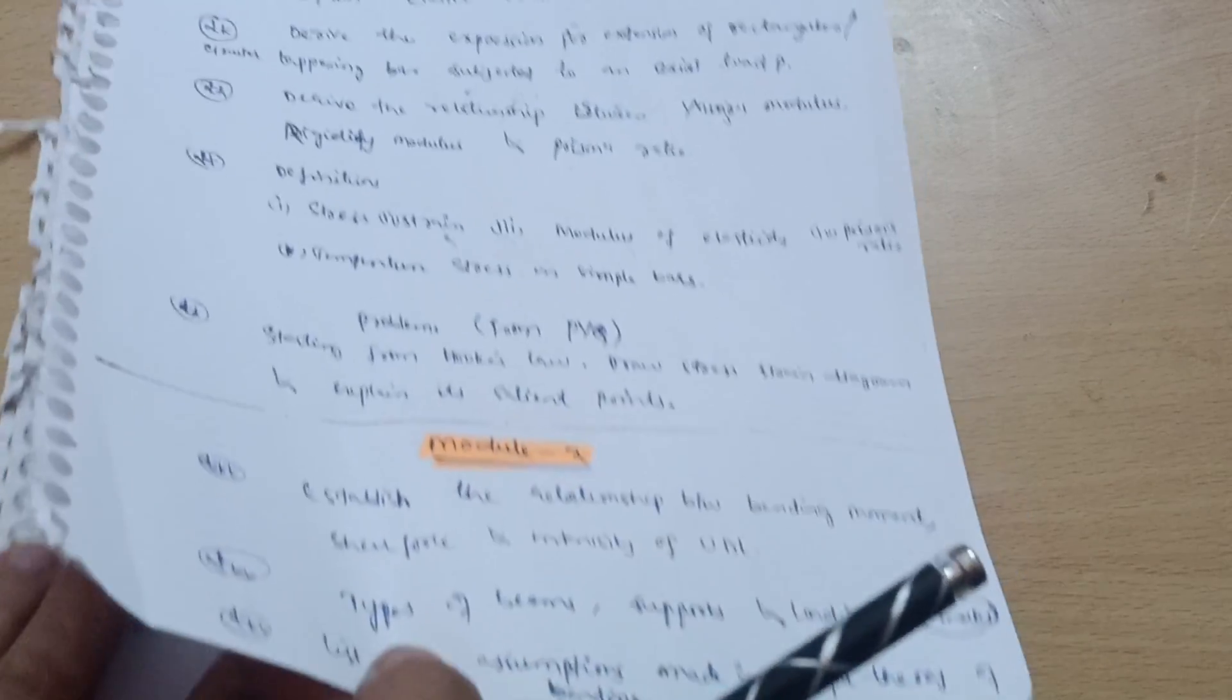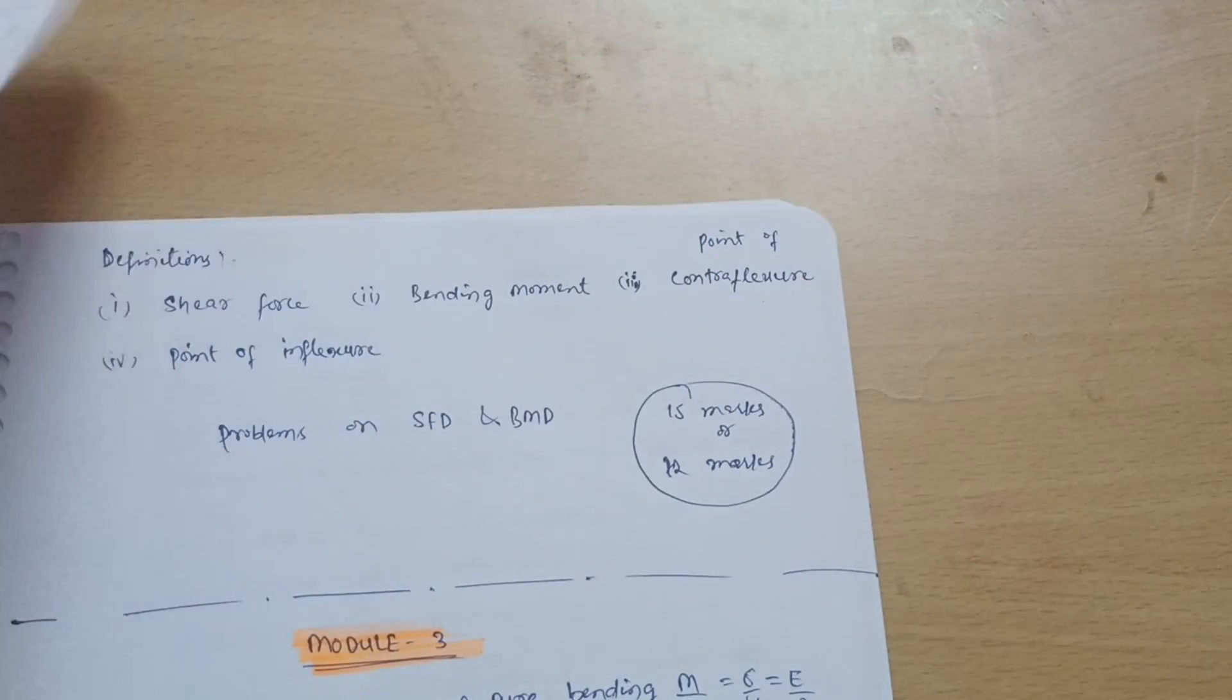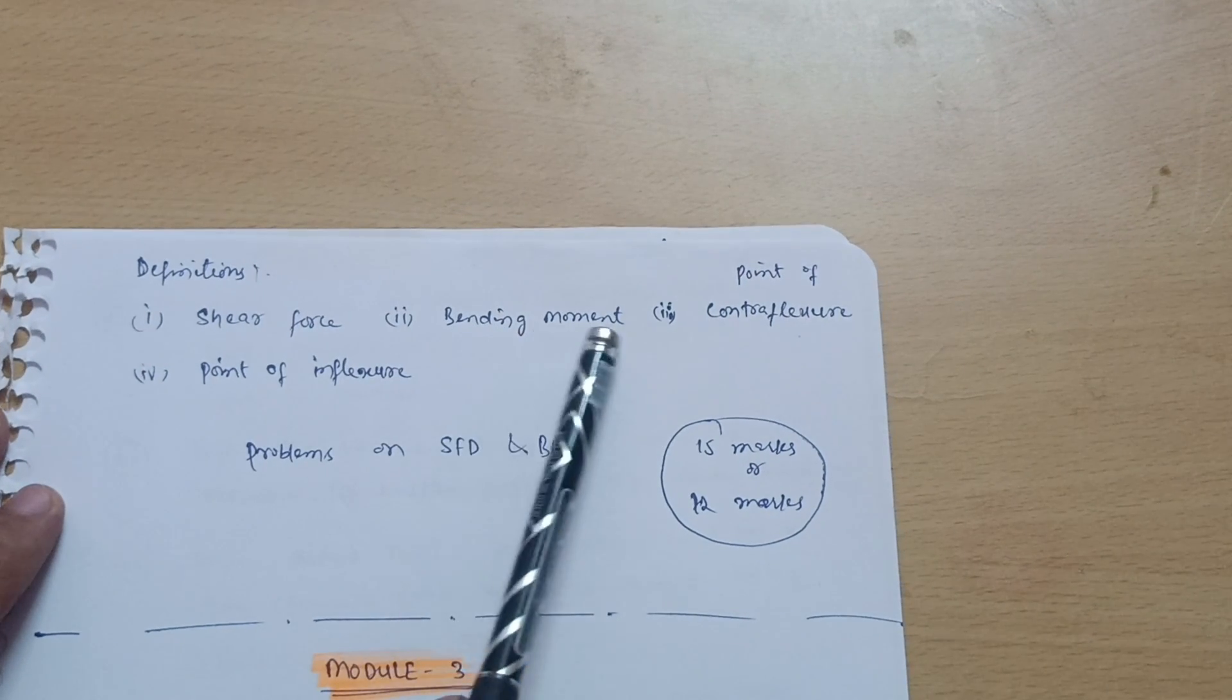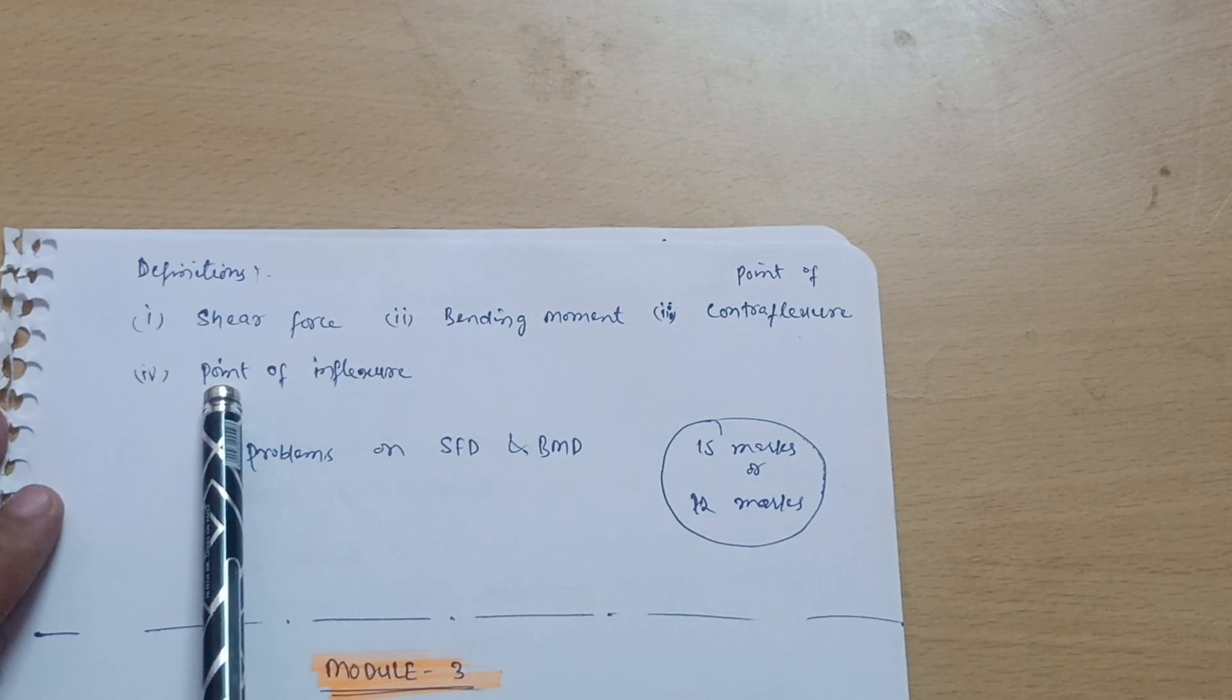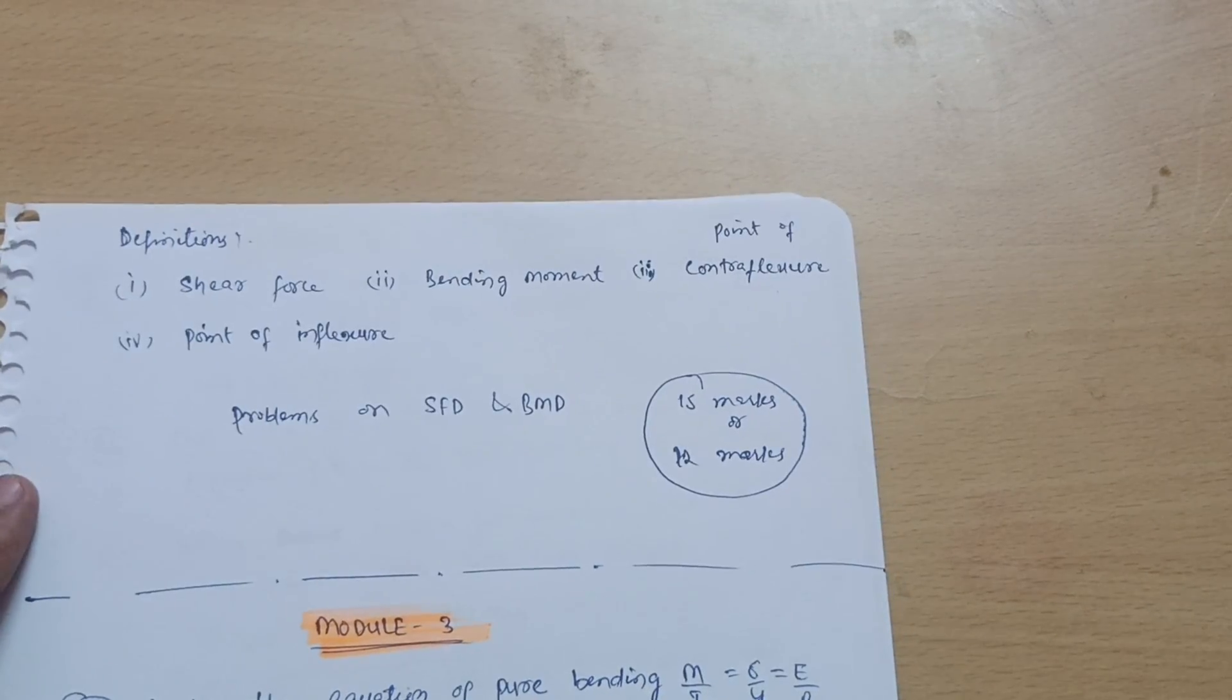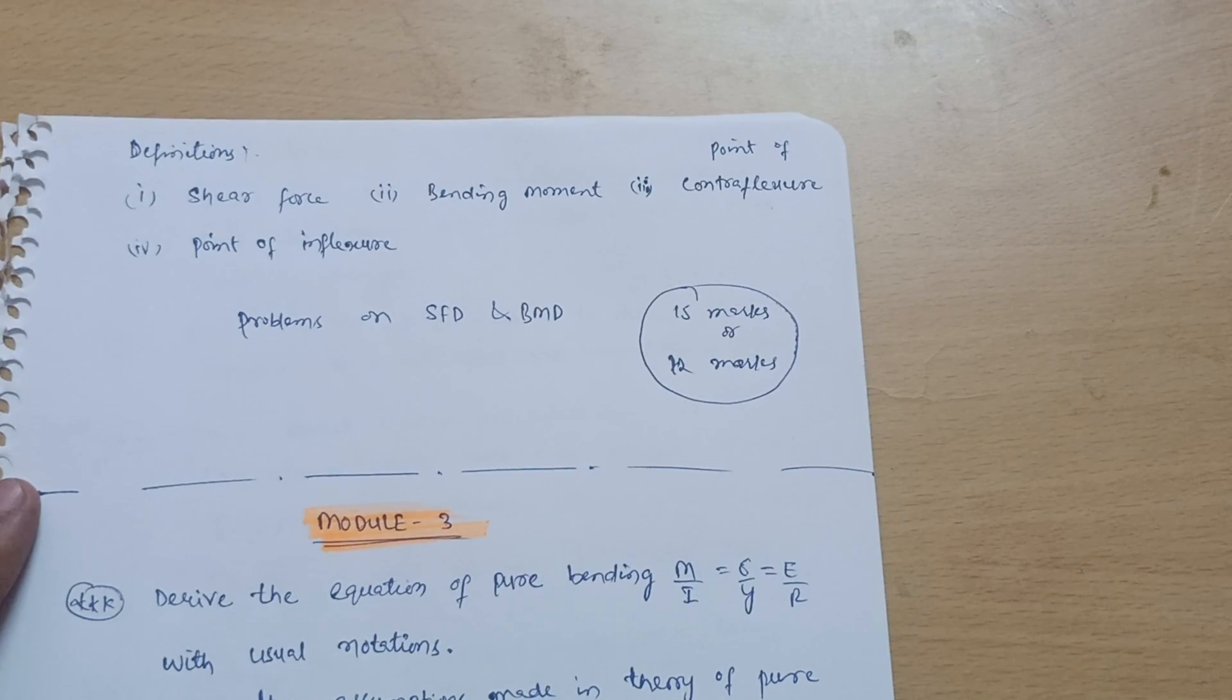Next is the assumptions made in simple theory of bending. Next is definitions like what is shear force, what is bending moment, contraflexure, what is point of inflexure.